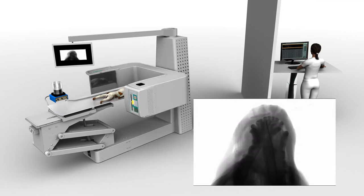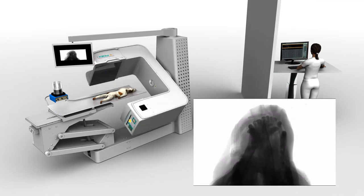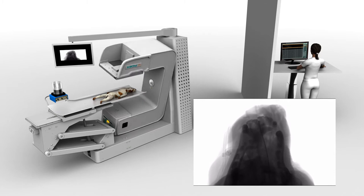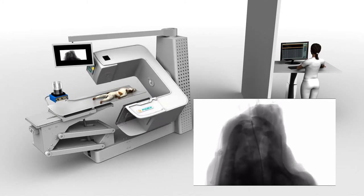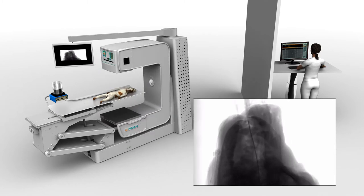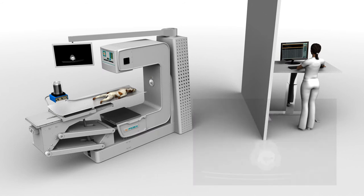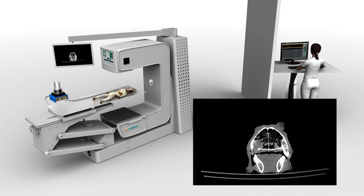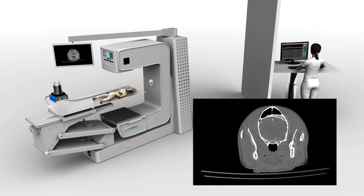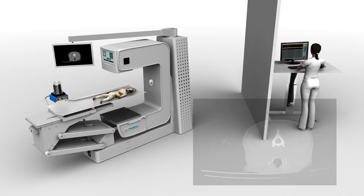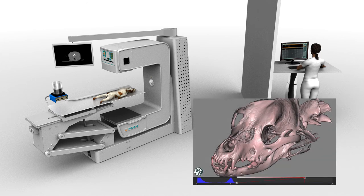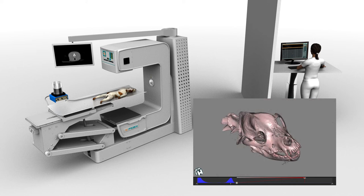Note that the ABC breathing system will automatically hold an inspiratory breath only during active scanning to prevent thoracic movement within the scan. Now the scan can be visualized as shown. Normal breathing resumes for the patient as this is being done.